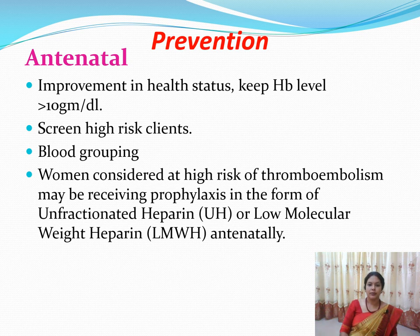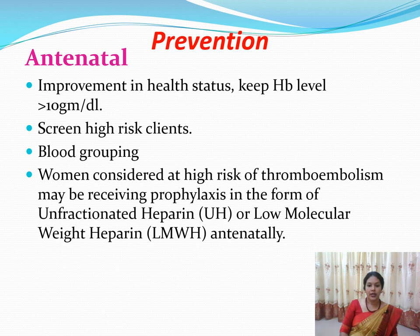Prevention of primary postpartum hemorrhage should begin in the antenatal period, since several causative factors are antenatal. Preventive measures include improving the mother's health status, ensuring hemoglobin is more than 10 g/dL, and screening for high-risk conditions such as HIV/AIDS. Blood grouping, cross-matching, and coagulation disorder assessment should all be done during the antenatal period.